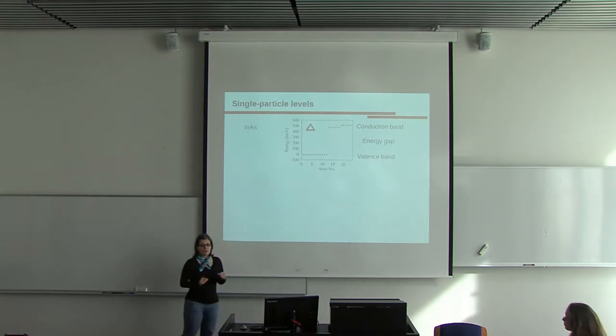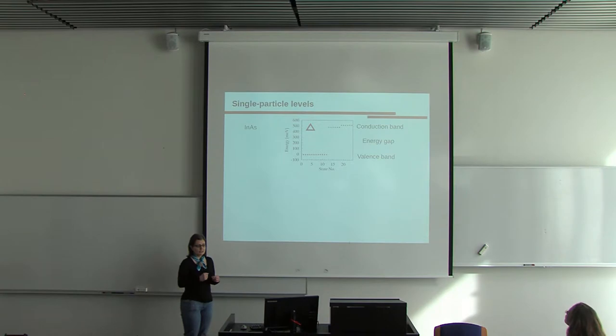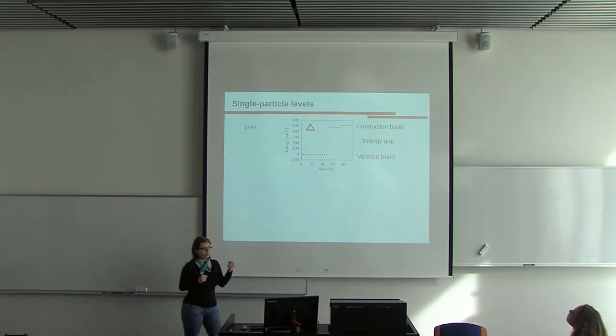Let's take a look at the energy spectrum of a single electron confined in a triangular quantum ring, which is made of indium arsenide material. As for every semiconducting material, there is an energy gap that separates the valence from conduction band. But both bands also have their own structure.